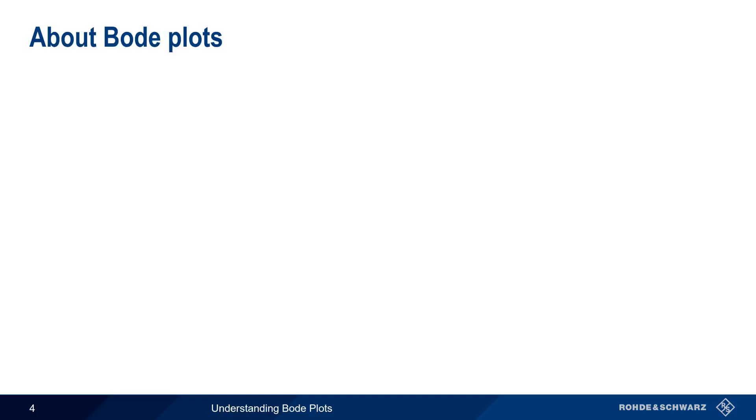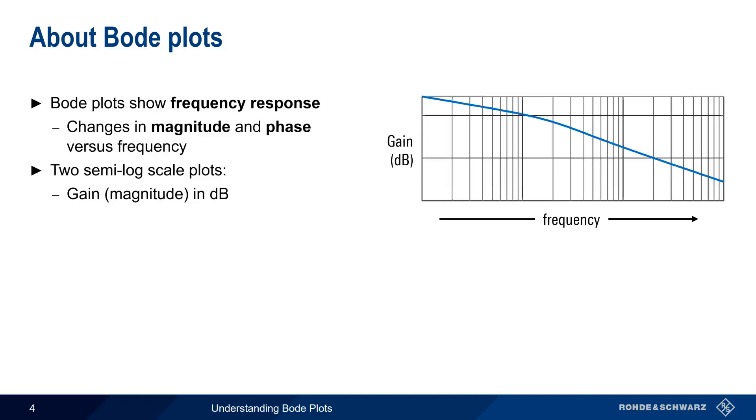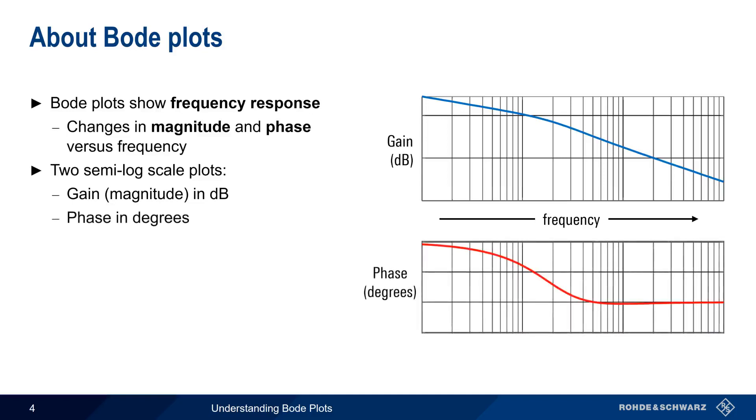Bode Plots show the frequency response, that is, the changes in magnitude and phase as a function of frequency. This is done on two semi-log scale plots. The top plot typically is magnitude or gain in dB, and the bottom plot is phase, most commonly in degrees.